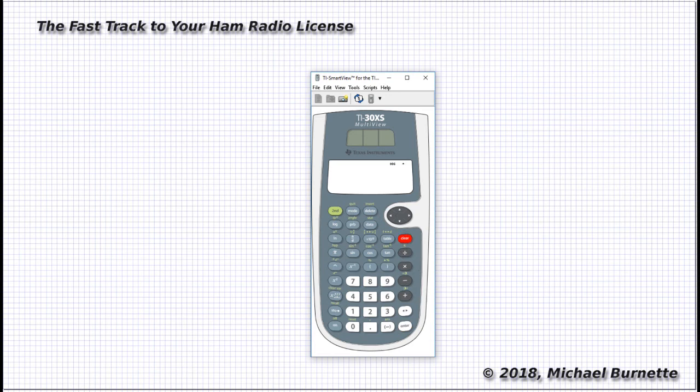Just to the right of the numerator over denominator key is another key we'll use a lot. It's the times 10 to the nth power key, and that one really saves a lot of keystrokes, which means saving a lot of potential mistakes.